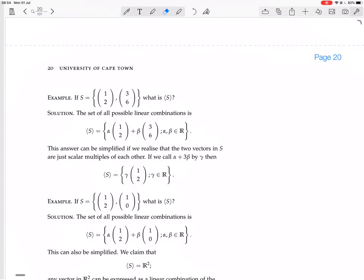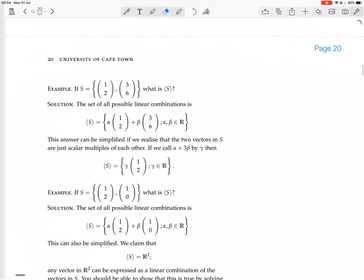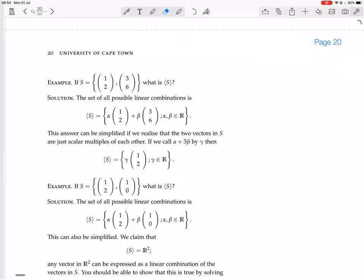So, that's the answer. But, actually, you can simplify this, right? Because those two vectors, (1,2) and (3,6), they're just scalar multiples of each other. So, alpha(1,2) plus beta(3,6), that's actually the same as just having alpha(1,2) plus 3beta(1,2), which equals (alpha + 3beta) times (1,2).